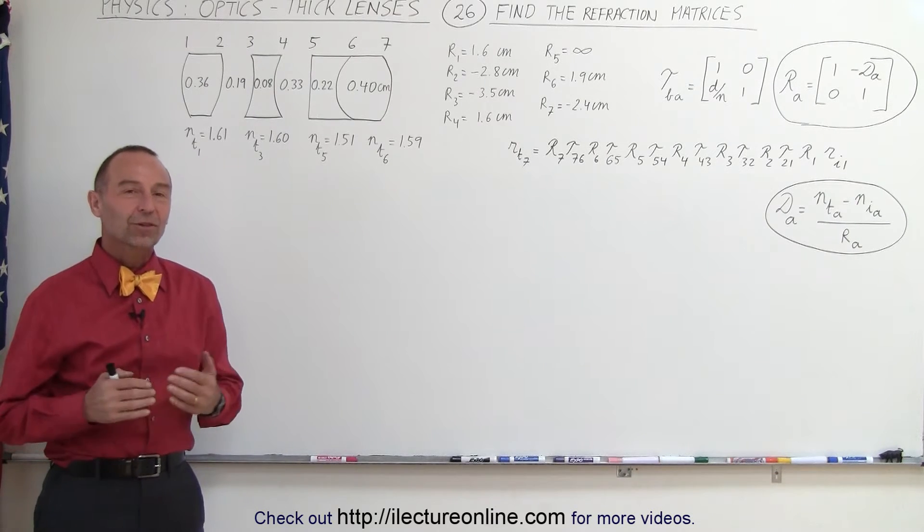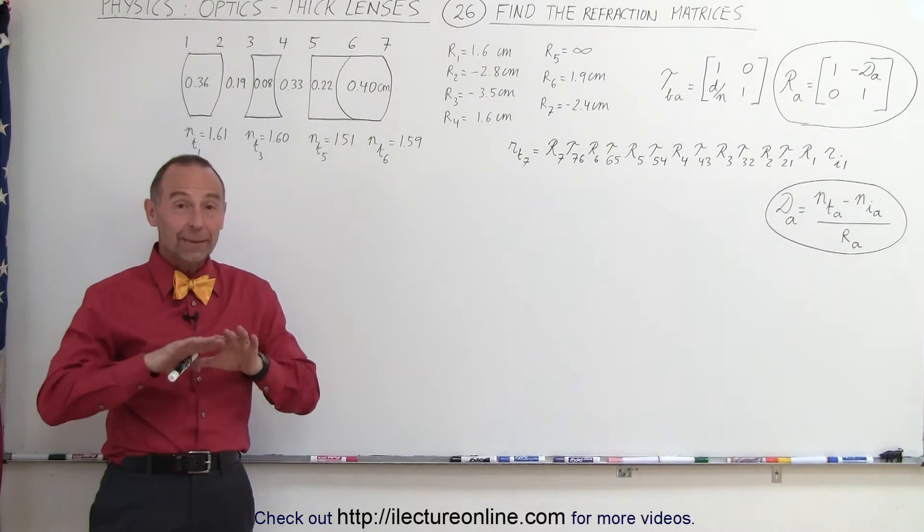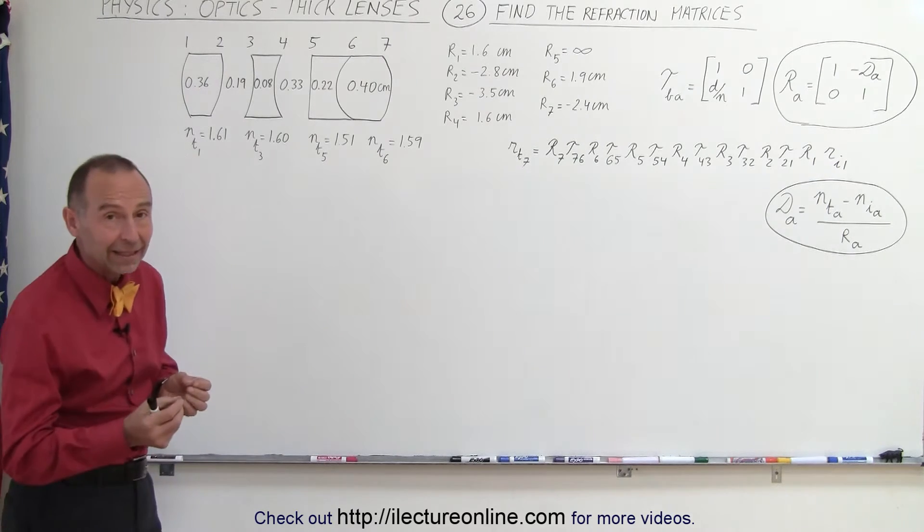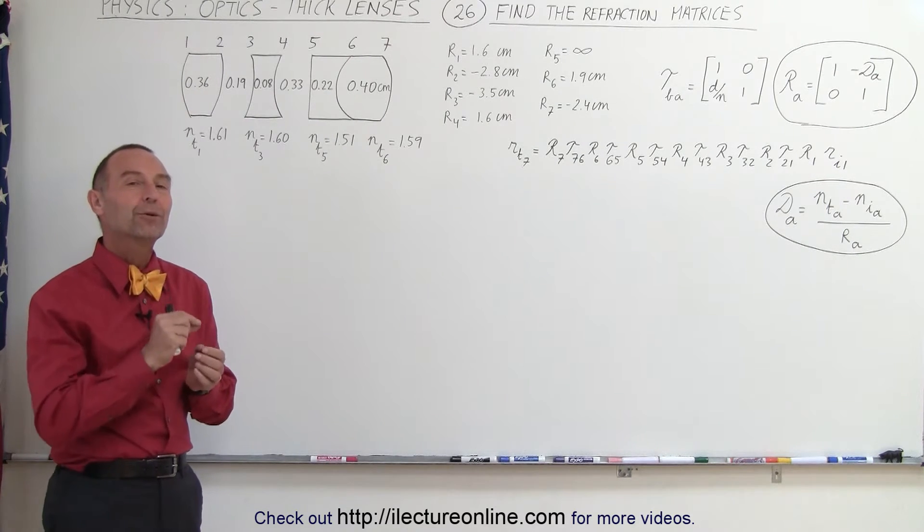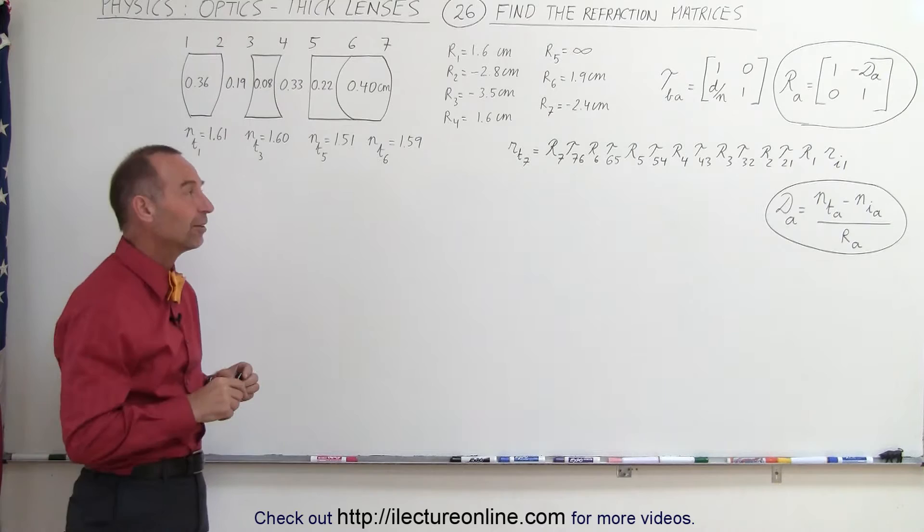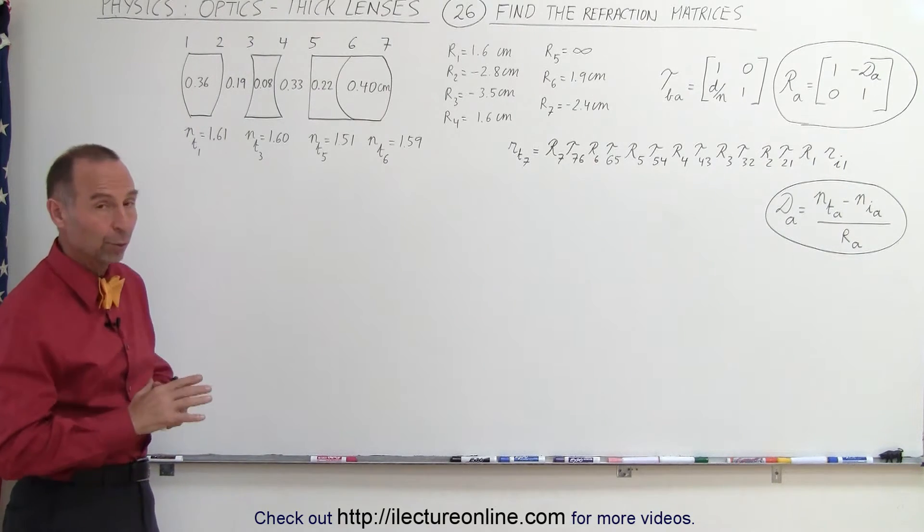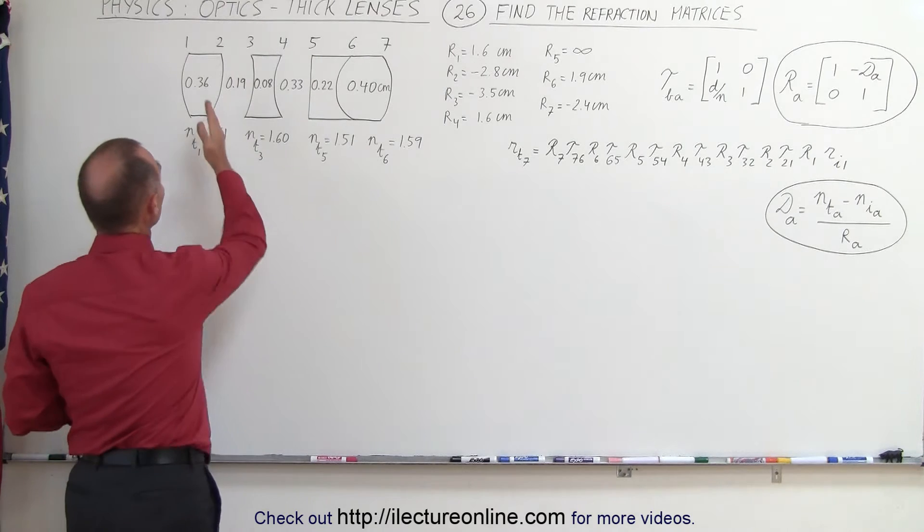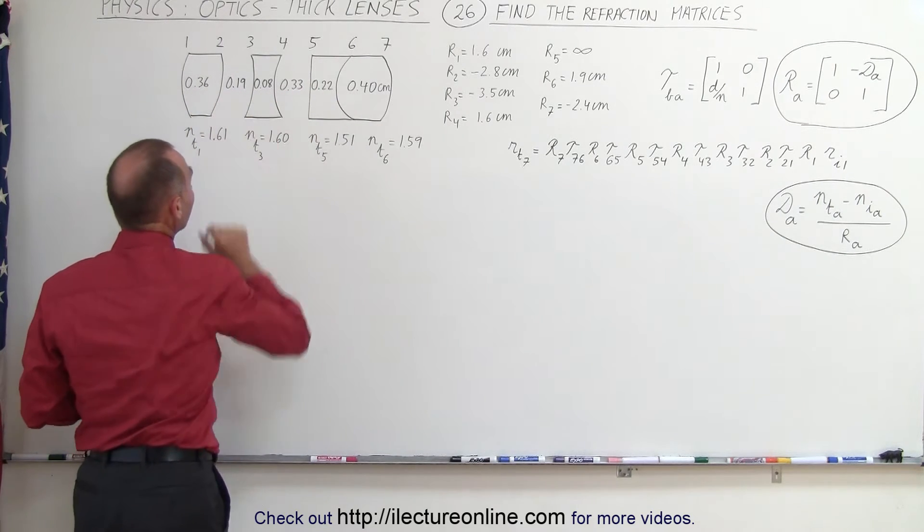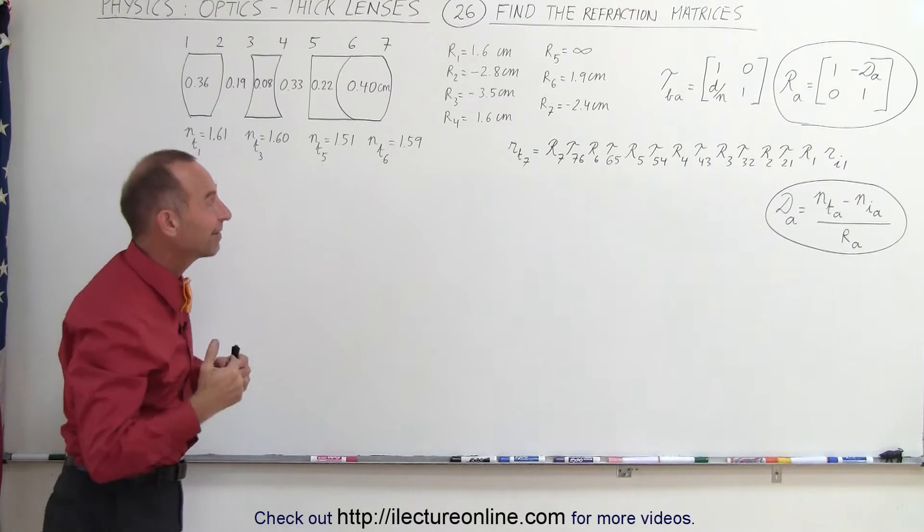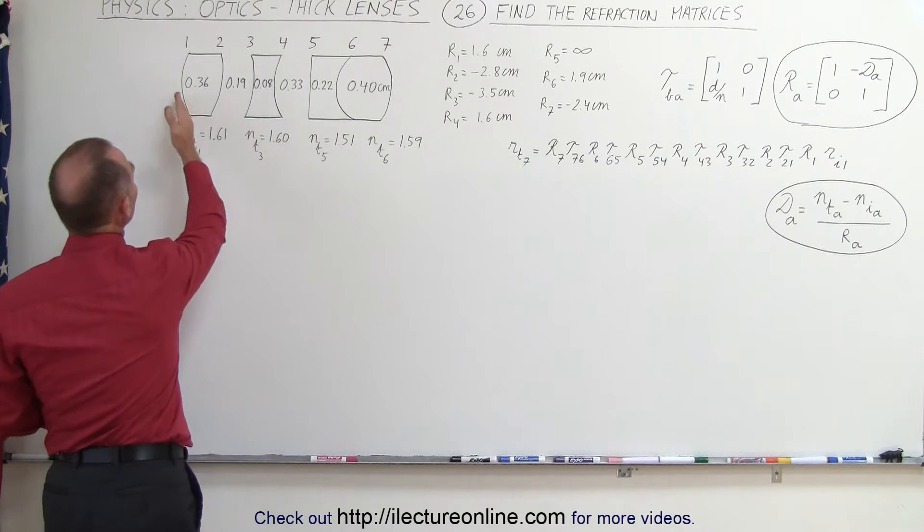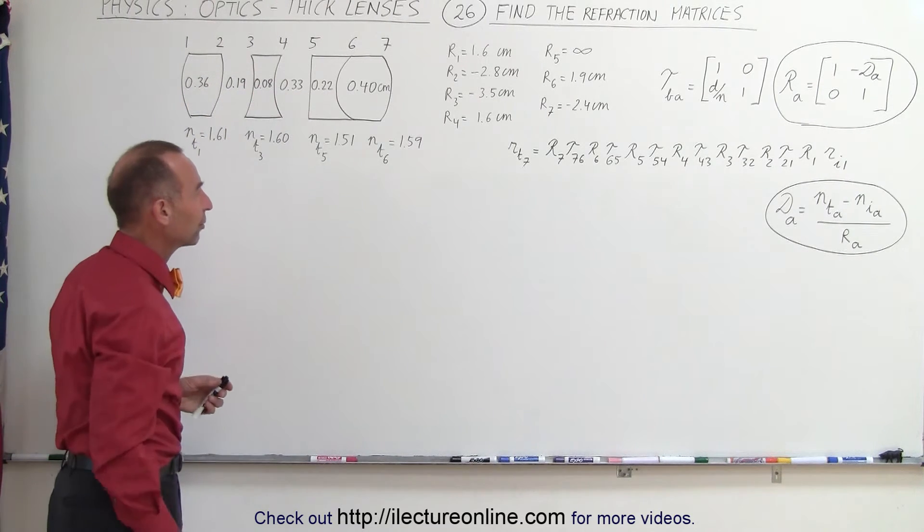Welcome to ElectronLine. Starting with the same compound lens system that we had in the previous video, we are now going to find the refracting matrices. In the previous video we found the transfer matrices. There were six transfer matrices because there were four lenses and two air gaps, and here we know that we have to find seven refracting matrices because there's a total of seven boundaries.